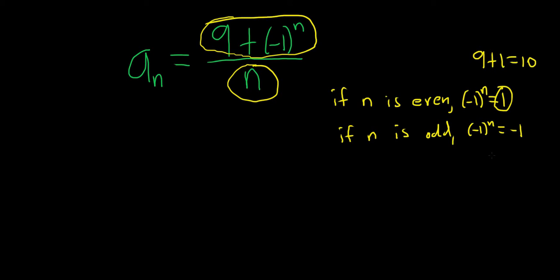If n is odd, you get 9 minus 1, so it's 8. So the top piece is always going to be 8 or 10. Pretty cool. Let me go over that again.